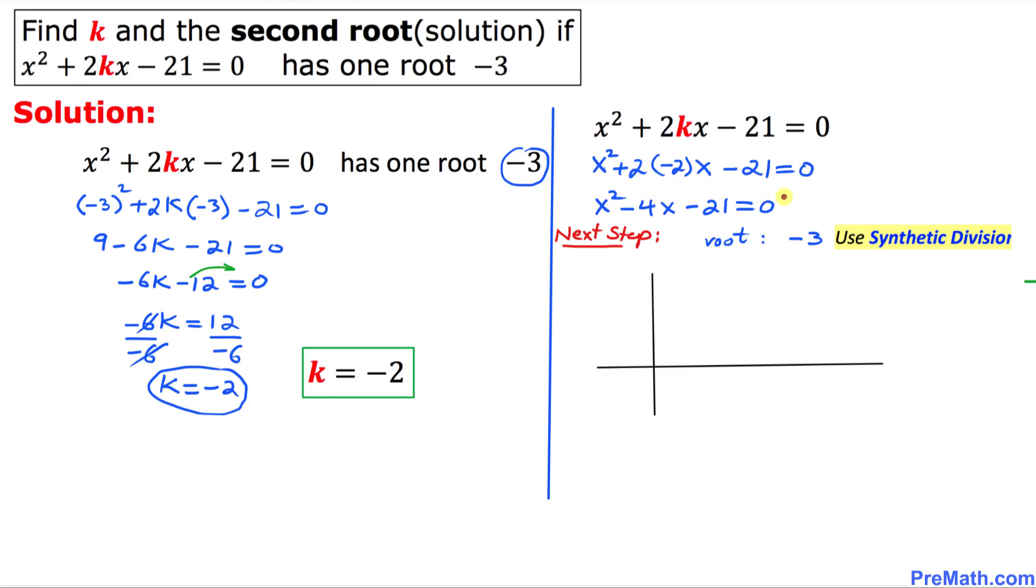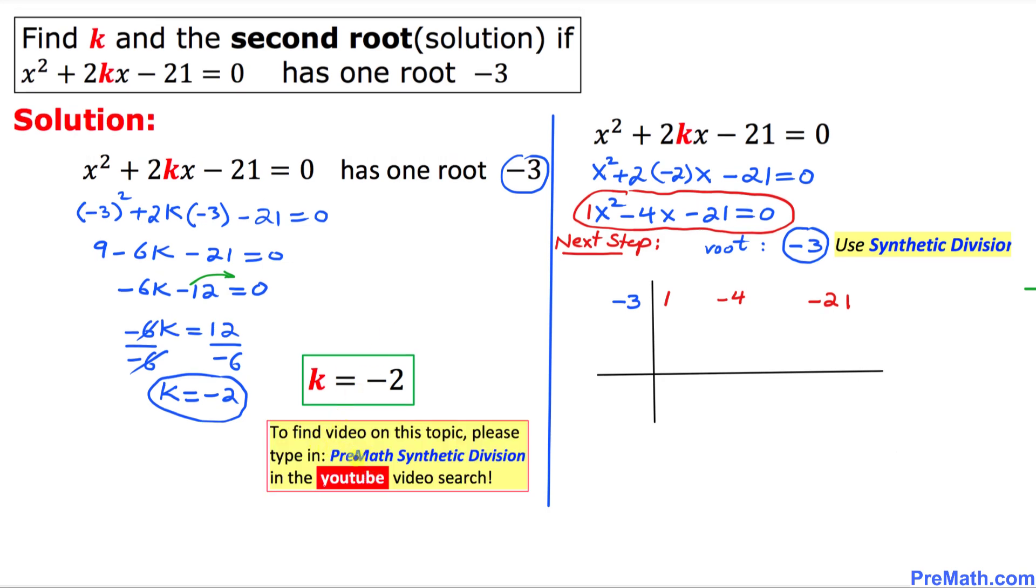First of all look at this quadratic equation over here. The leading coefficient is 1 and this is negative 4 and negative 21. I am going to put down 1, negative 4, and negative 21 from these numbers. And then over here this root negative 3 is going to come down right here. By the way, if you are not sure about synthetic division, you can learn more from my YouTube channel by just typing in PreMath Synthetic Division and you're going to see a bunch of videos that you can check out.